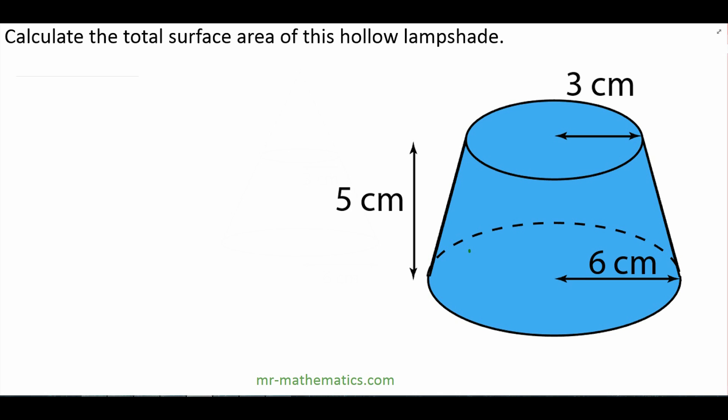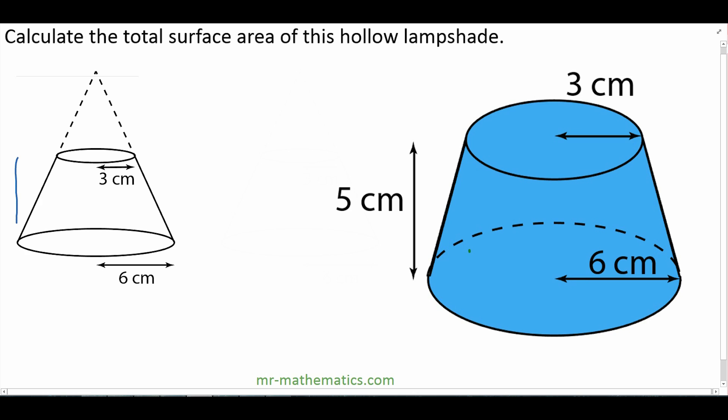We are going to calculate the curved surface area of this lampshade by considering it as part of a cone. Because the base radius is 6 and the top radius is 3, you can see that the total perpendicular height of the cone will be 10, which is just 5 plus 5.